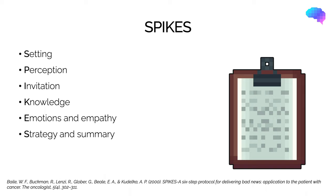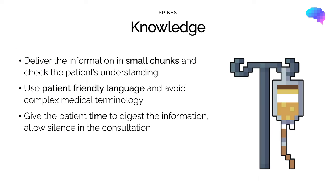So just to recap, so far in the SPIKES model we have set up the consultation, established the patient's perception, and obtained the patient's invitation to proceed. The next stage is giving the knowledge and information to the patient. The key to doing this is delivering information in small chunks and regularly checking the patient's understanding. You should use patient-friendly language and avoid complex medical terminology. The use of silence is vital here, although this can feel very uncomfortable. Give the patient time to digest the information and always avoid interrupting them. It's also important to give a warning shot before you deliver the bad news, to give them a moment to psychologically prepare. Make sure your tone is respectful, at a slow pace and clear.